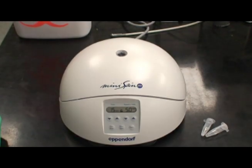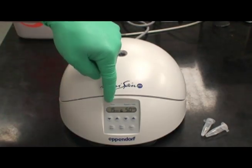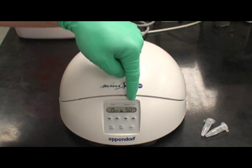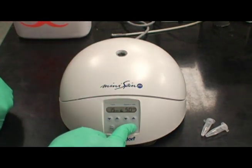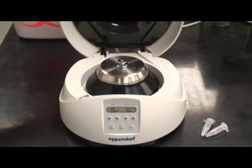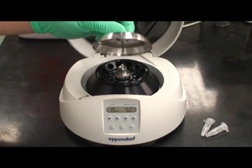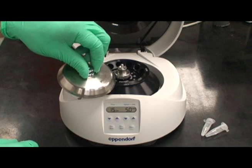This is an Eppendorf microfuge device. As you can see, the time and speed can be adjusted by arrows below. The lid can be opened by pressing the button as shown. The metal lid must be replaced prior to use to avoid damage to the device.